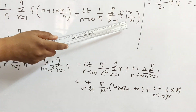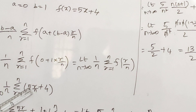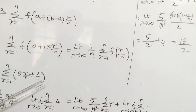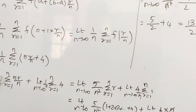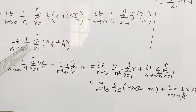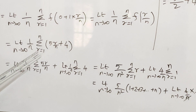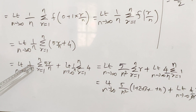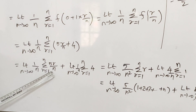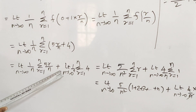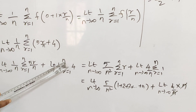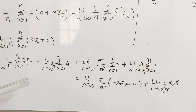Applying the function definition: 5 into (r by n) plus 4. So limit n tends to infinity, 1 by n, expanding gives summation r equal to 1 to n of 5r by n. Plus limit n tends to infinity, 1 by n, summation r equal to 1 to n of 4 (constant).